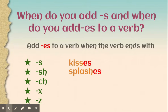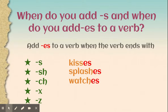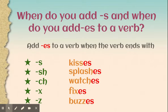The word 'splash' ends with -sh, so to make it 'splashes' we add -es. The word 'watch' ends in -ch, so we add -es to make it 'watches.' The word 'fix' ends with -x, so we add -es to make it 'fixes.' And the word 'buzz' ends with -z, so we add -es to make it 'buzzes.'